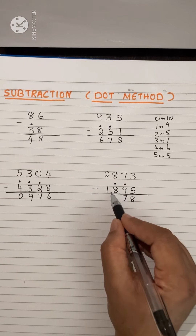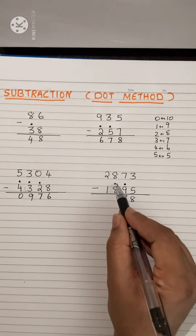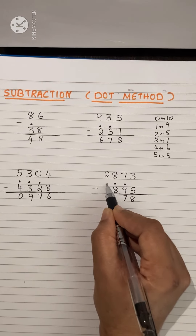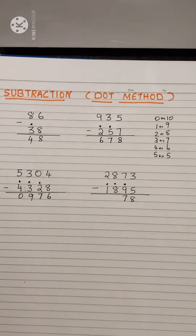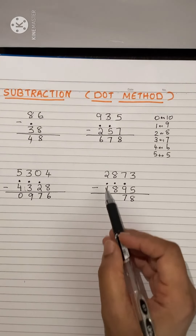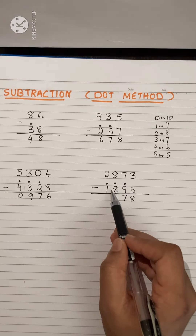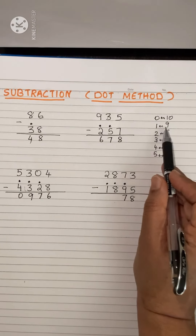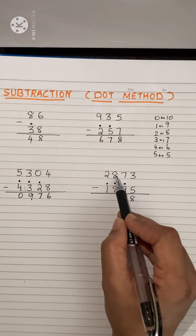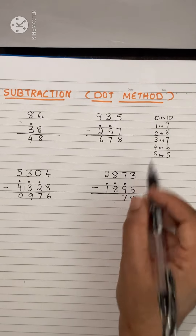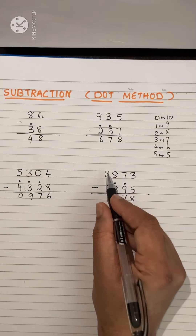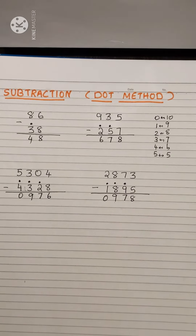Now this is 9. This becomes 8 plus 1 equals 9. And 8 and 9 — not possible. So put a dot over here. Now this is 8 plus 1 equals 9. Which number is related to 9? It is 1. Add 1 with 8: 8 plus 1 is 9. Now this is 1 plus 1 equals 2, and 2 minus 2 is 0.